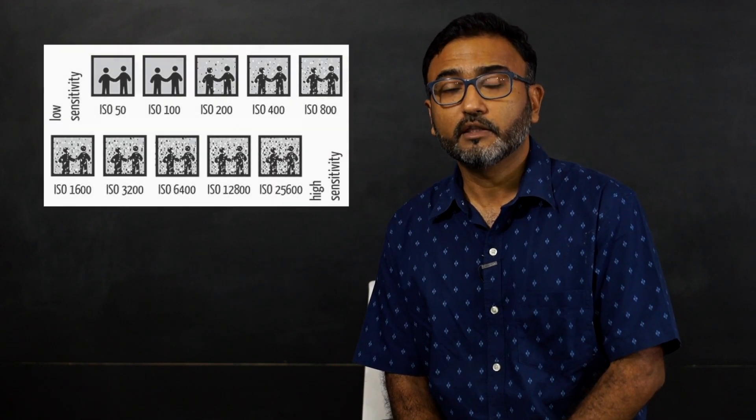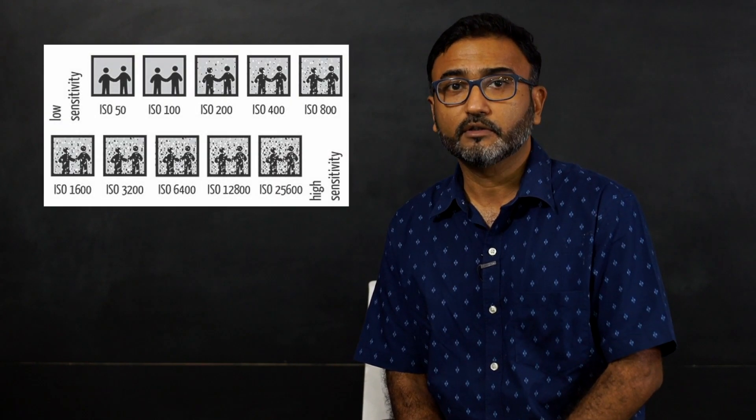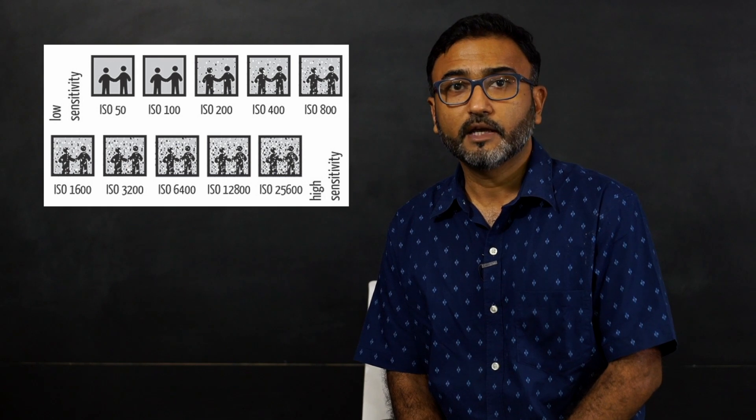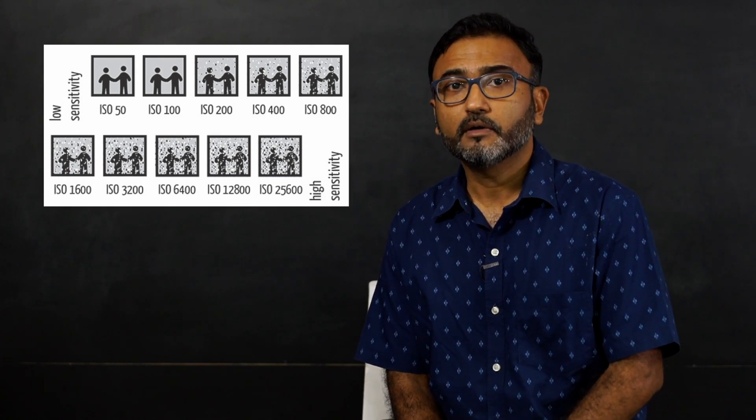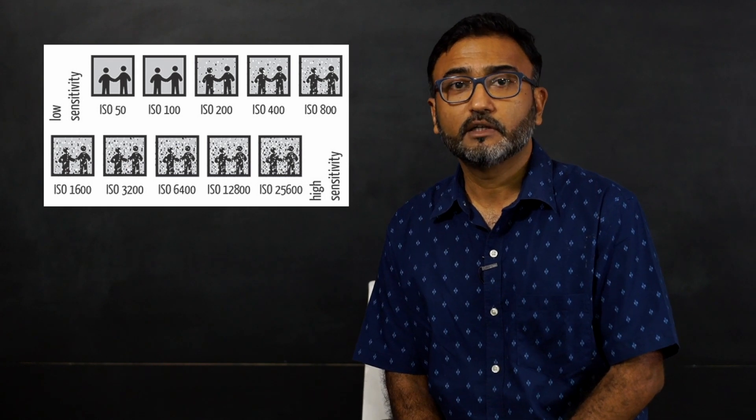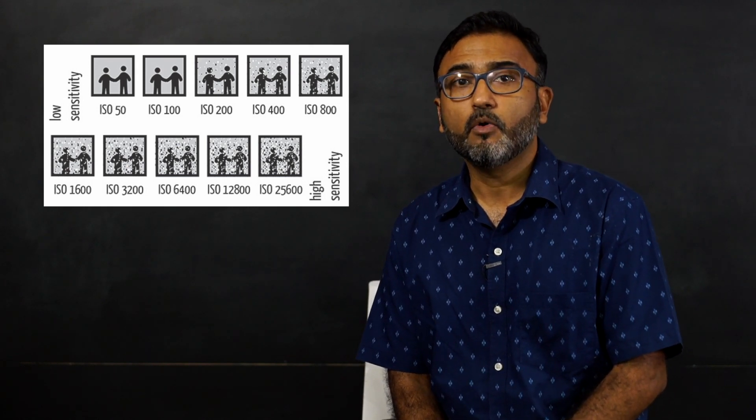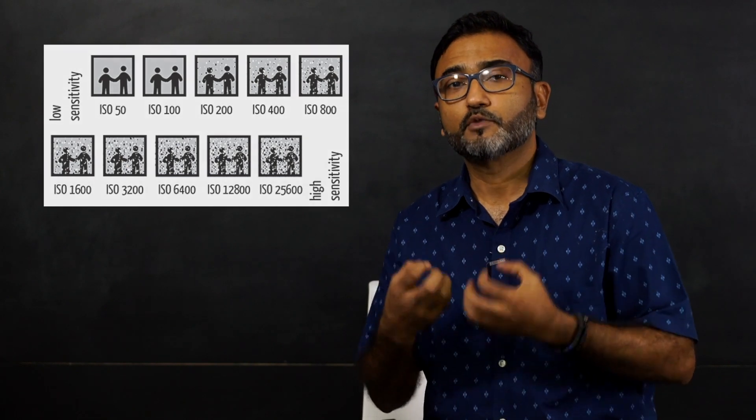So that's what a sensor is, and that's what the sensitivity of the sensor is—how much light it takes is what ISO controls. The smaller the number, the less the sensitivity. The higher the number, the more light it sucks in and captures on the sensor itself. Now there are a couple of other things you need to know about all these three topics.